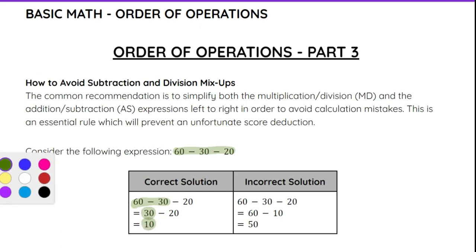So the correct answer is 10. Some people mistakenly will try to do 30 - 20 first, not doing it from left to right, and they will get 60 - 10. But 60 - 10 is 50, which is not correct. So I want to point out it's important you go left to right.